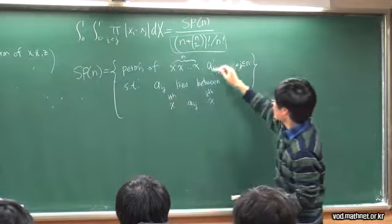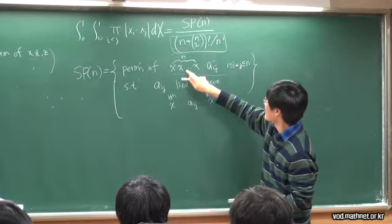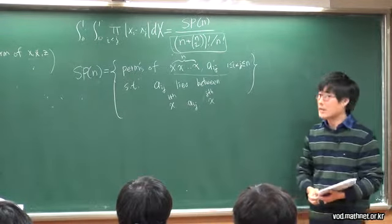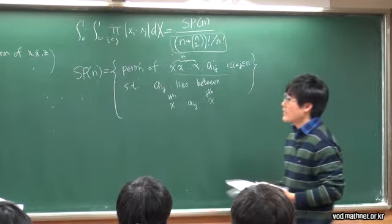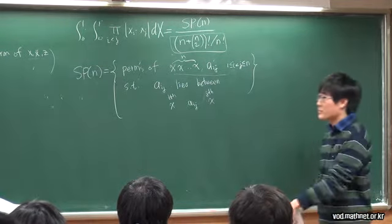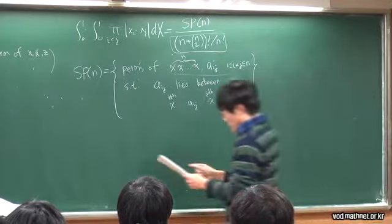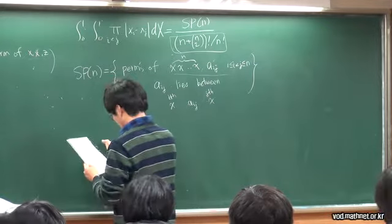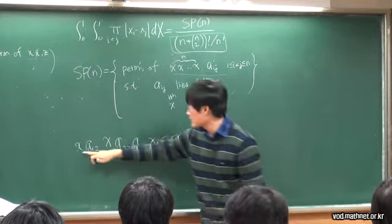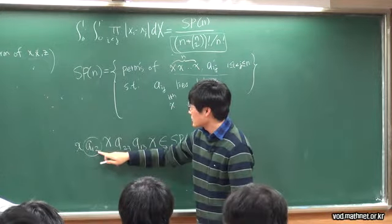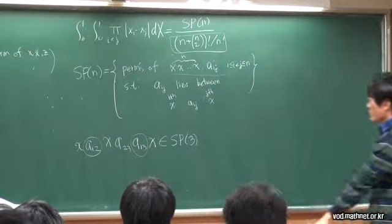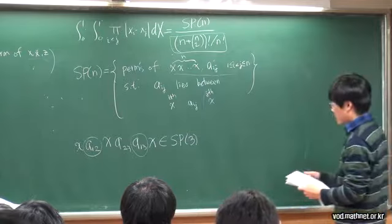We have n x's and n-choose-2 a's. Because the x's are all identical we divide by n factorial. So evaluating the Selberg integral is equivalent to enumerating permutations — this is Stanley's combinatorial interpretation. For example, in SP(3) an element looks like: x, a_{12}, x, a_{23}, a_{13}, x, where a_{12} is between the first and second x, a_{13} is between the first and third x, and so on.